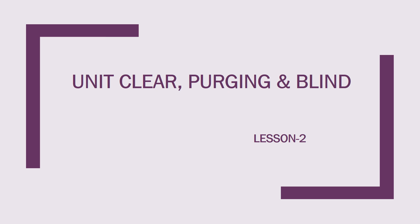We are going to discuss about unit clear, purging, and plant in this lesson. In unit clear, we are going to discuss about the major parts of equipment - mainly boiler and furnace, as well as auxiliary equipment. We are going to discuss pump, then specialized portions of a plant like steam purging precautions, and the fourth area is chemical injection points. These are the four places that require special attention during unit clear.